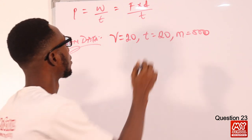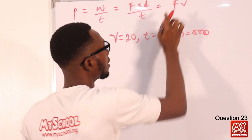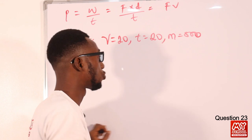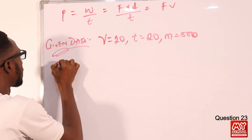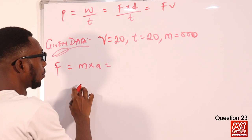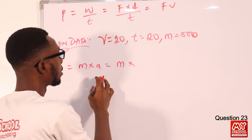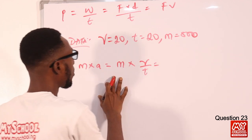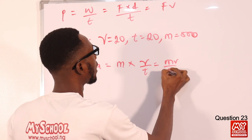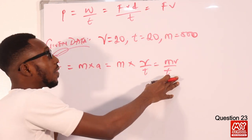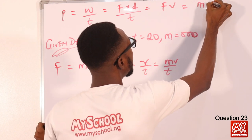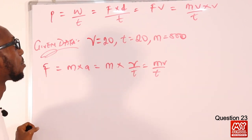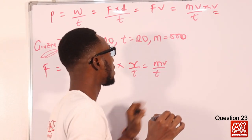Work done over time equals force times distance over time, and distance over time is speed. So P = force times speed. Force = mass times acceleration = mv/t. Therefore P = mv/t × v = mv²/t.